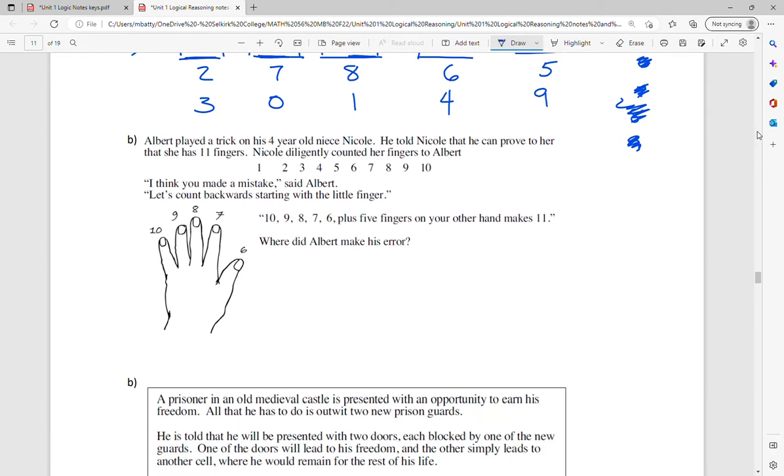The next one is a bit of a trick. So it's like the fallacious proof. It's a trick in that it sounds logical, but there's something wrong. So Albert plays a trick on his four year old niece. And he says to his niece that he can prove that she has 11 fingers. So Nicole counts her fingers to Albert. And then he says, I think you made a mistake. Let's count backwards, starting with your little finger. So 10, 9, 8, 7, 6 plus five more makes 11. Where is that mistake? So he's saying the numbers, counting backwards this way. And when he gets to the six, he adds five more.